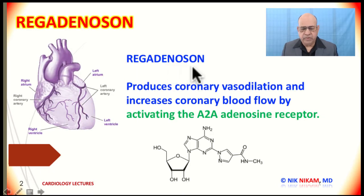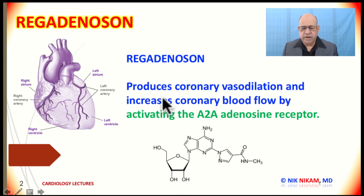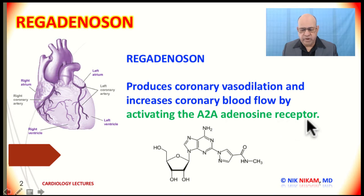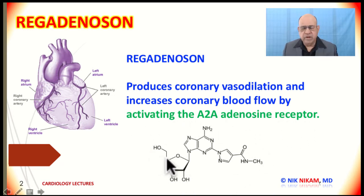Regadenosine produces coronary vasodilatation and increases coronary blood flow by activating the A2A adenosine receptor. Here is the chemical structure of regadenosine.